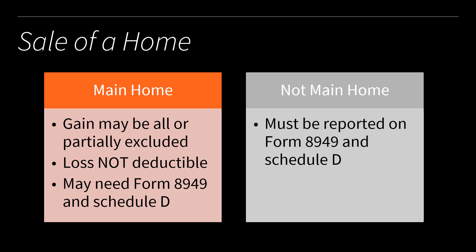Aside from stocks and mutual funds, we can also help report the sale of a home. First, we determine whether it was the taxpayer's main home or not. If it was their main home and they have a gain, some or all of that gain may be excluded from income. If it was a loss on a main home, it won't be deductible. Depending on the situation, they may or may not need to report on Form 8949 and Schedule D. If it was not their main home, the sale must be reported on Form 8949 and Schedule D.